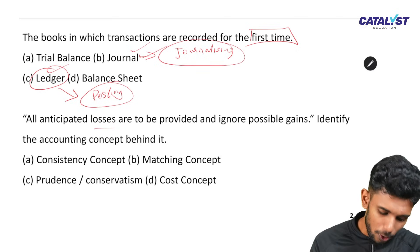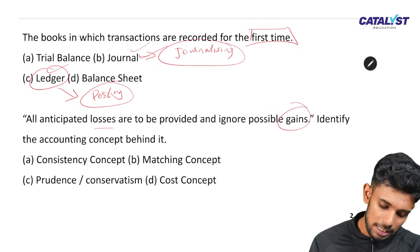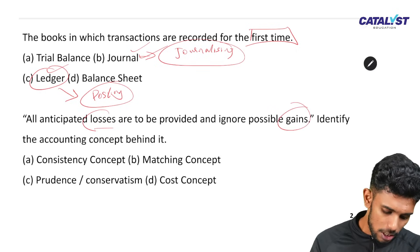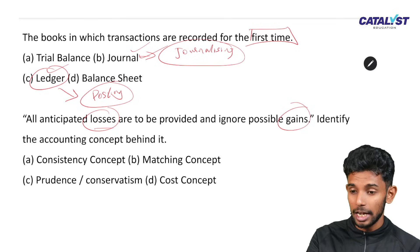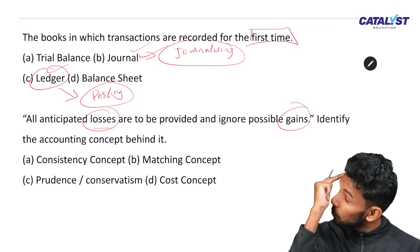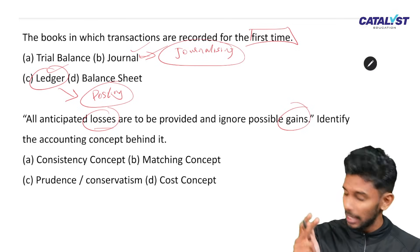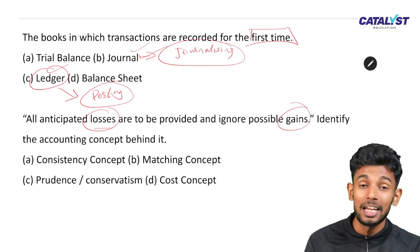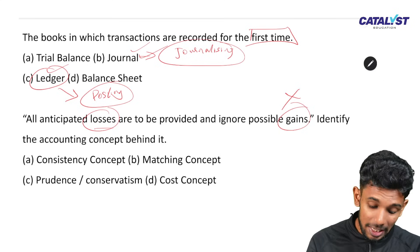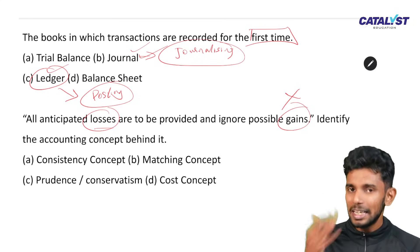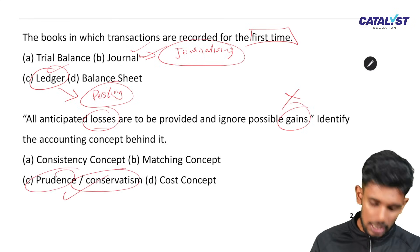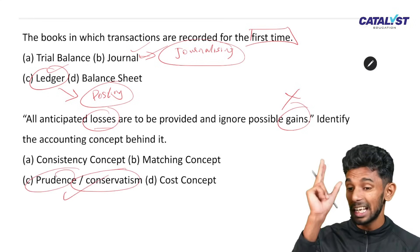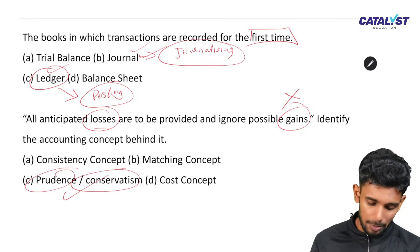Anticipate your losses and provide for them, but ignore possible gains. If there is a loss, we will account for it. Even if there is a possible gain, we will ignore it. That concept is the concept of conservatism. It is a very important concept for the exam.